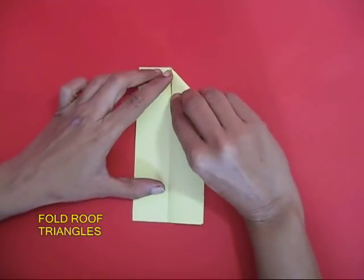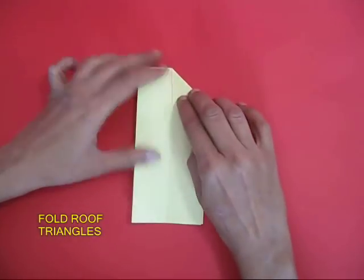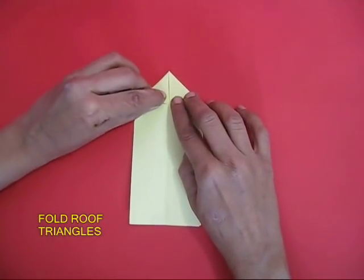Open the strip and on the fold make two small triangles like a small roof.